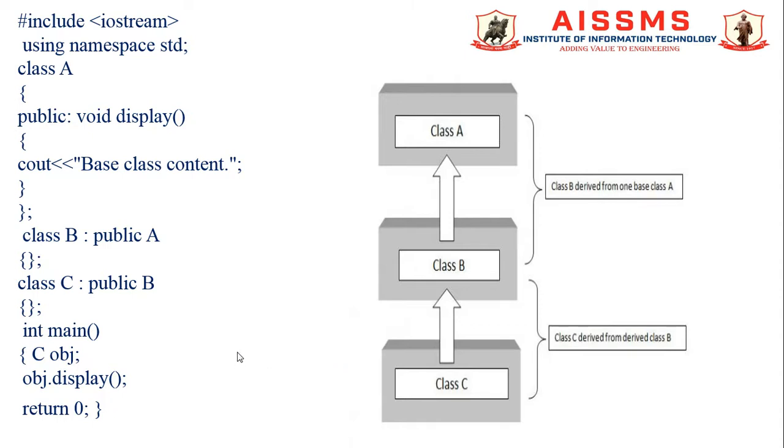You can see with the help of this source code, void display is a function used to display the base class content. In class A, which is the base class, class B and class C will inherit the contents of base class, which might be name, surname, color or other properties available for class A.